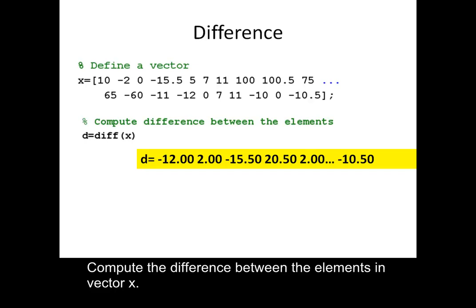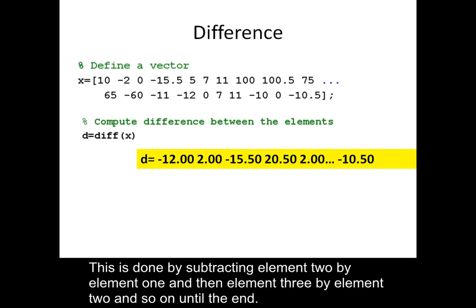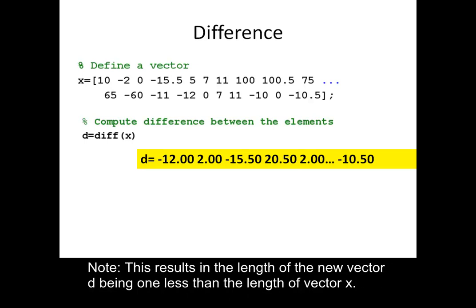Compute the difference between the elements in vector x. This is done by subtracting element 2 by element 1, and then element 3 by element 2, and so on until the end. Note: this results in the length of the new vector d being one less than the length of vector x.